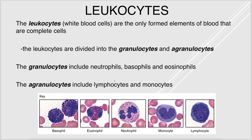Leukocytes are complete cells, meaning they have a nucleus, they have organelles, and all of that. There are granulocytes and agranulocytes. The granulocytes are the basophils, eosinophils, and neutrophils. The agranulocytes are the lymphocytes like B and T cells, and the monocytes.